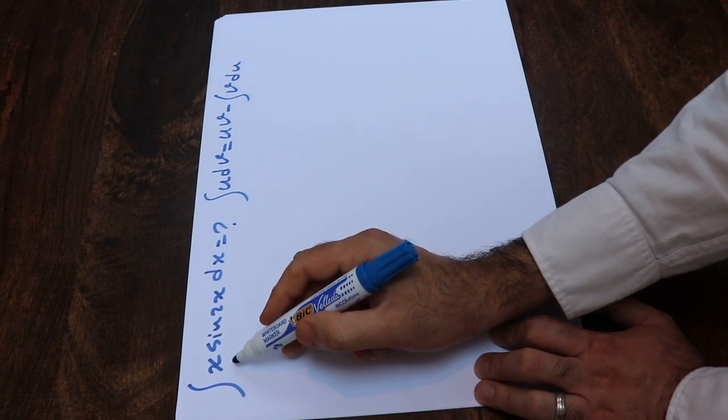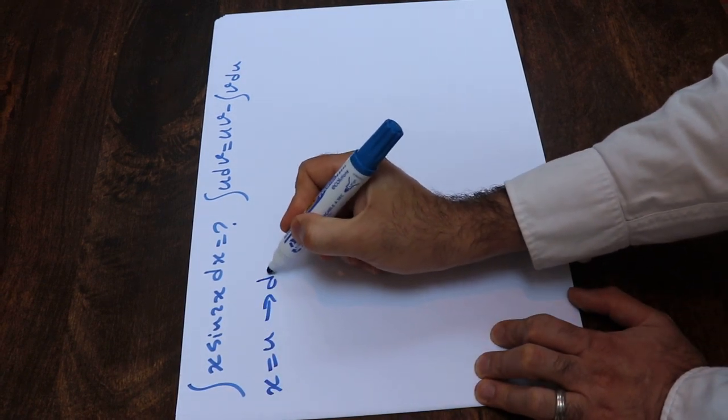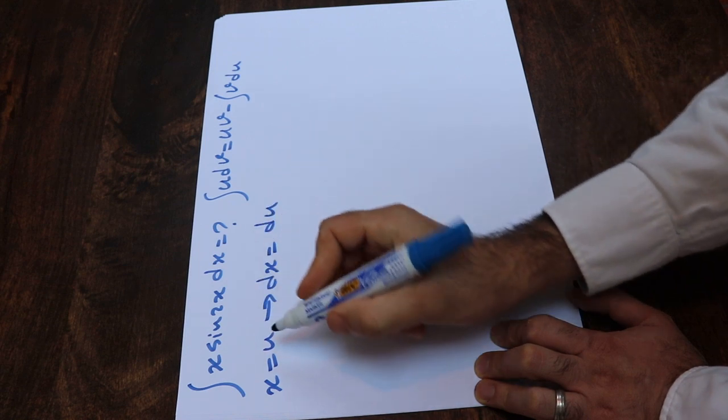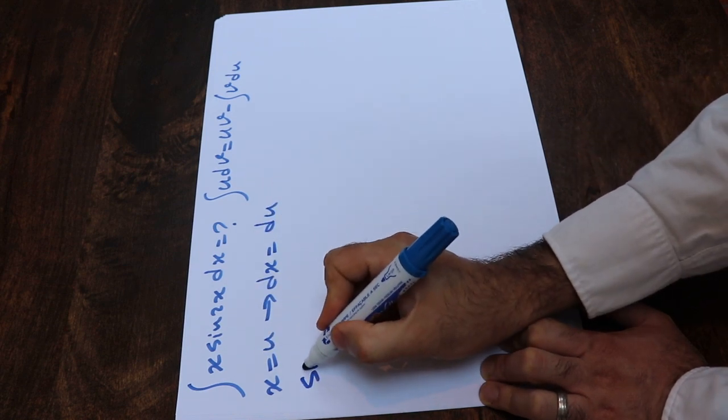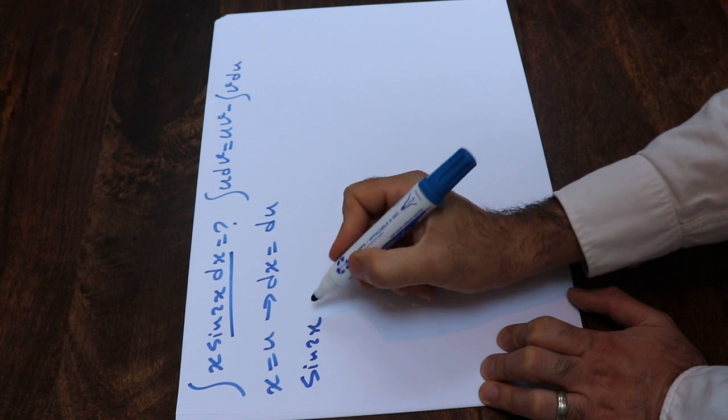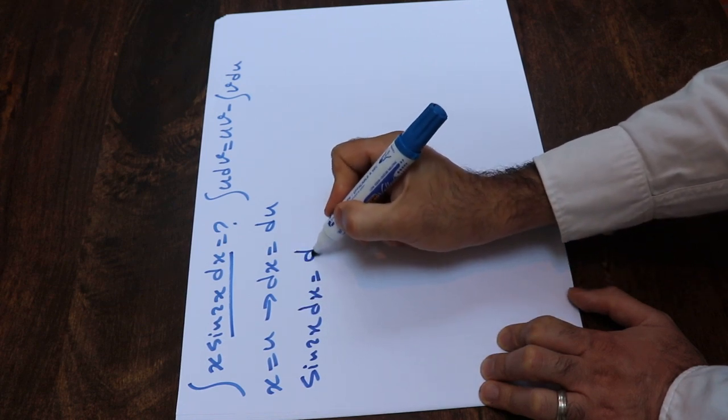So here what I do, I define x as u, therefore dx will be equal to du. And I define sine 2x, sine 2x dx as dv.